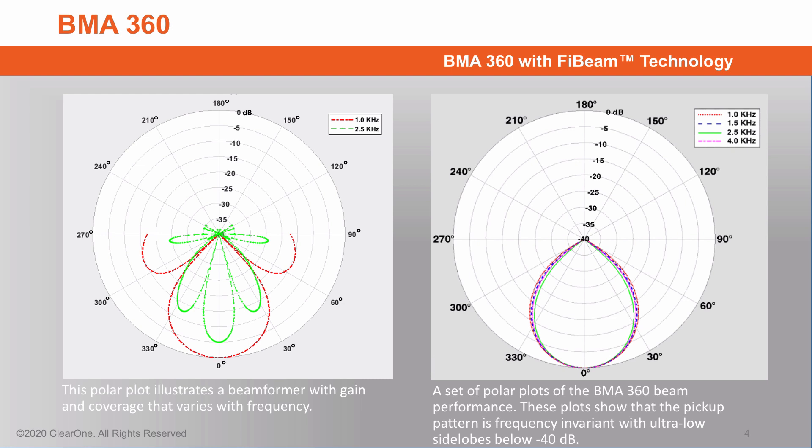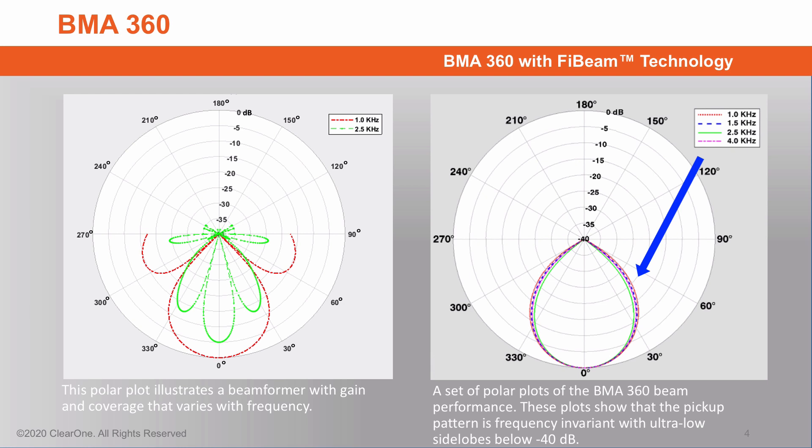The plot on the right shows the BMA360 at four specific frequencies. Notice the near-identical pattern of each frequency, and this extends both below 1000 Hz and above 4000 Hz as well. That means there is no variation of the voice within the beam itself, or within the room across other beams. You are free to move and the sound stays the same regardless of where you are.